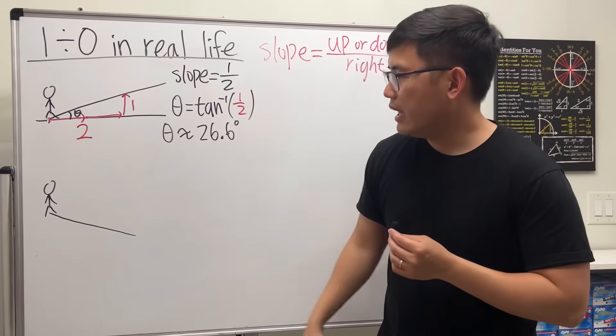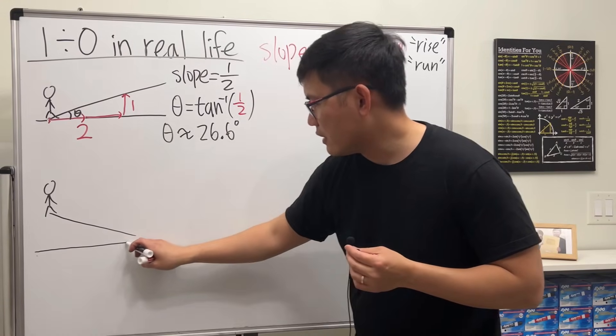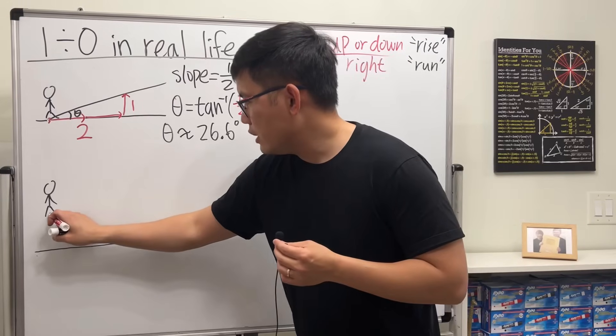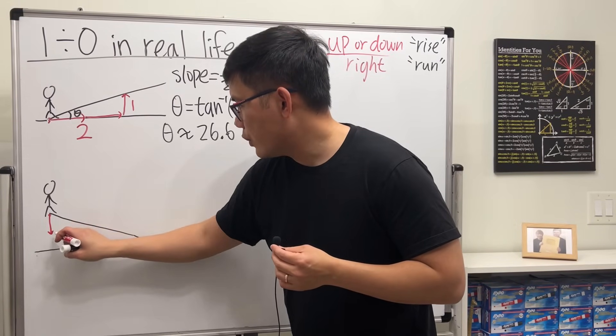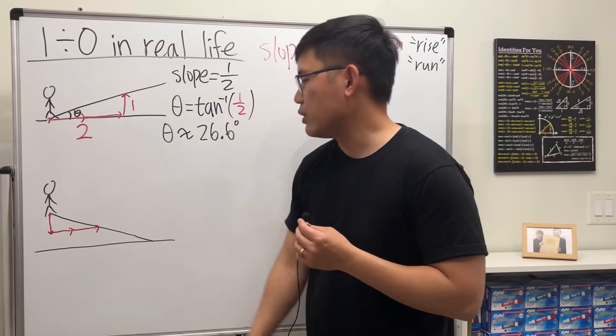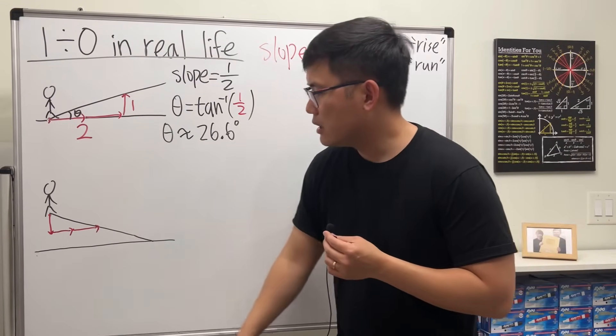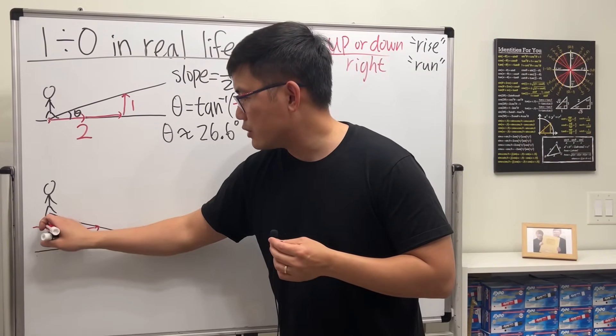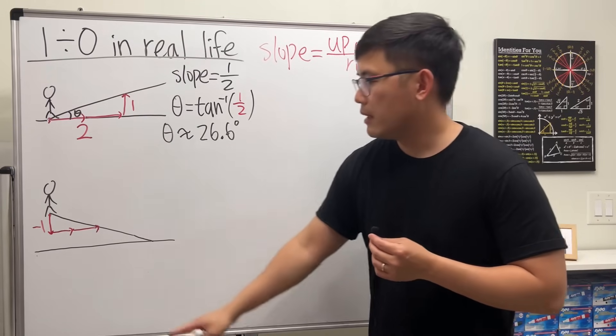Now let's talk about going downhill. Let's say here is the road. Suppose each time we go down, we move to the right two times. In this case, because we go down, it's considered negative one, and we still move to the right two times.